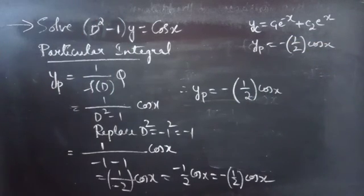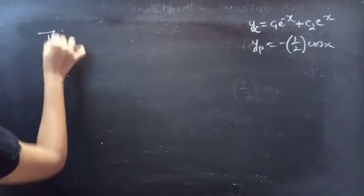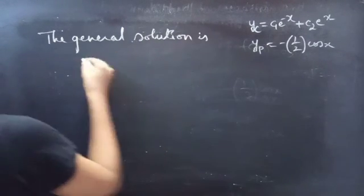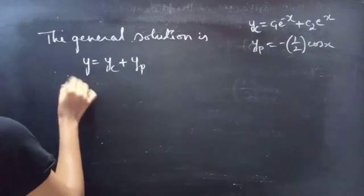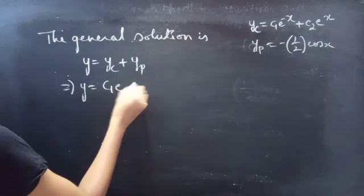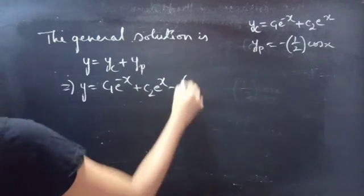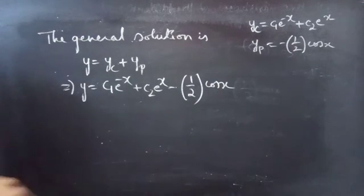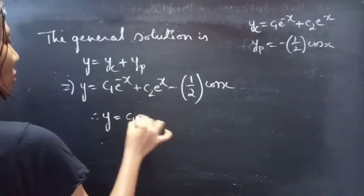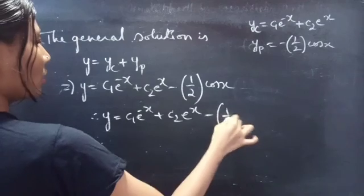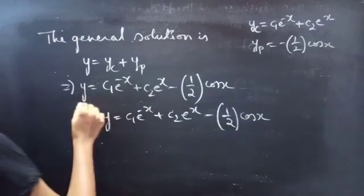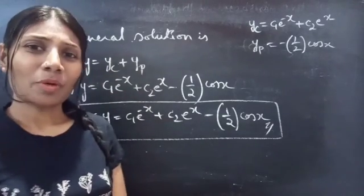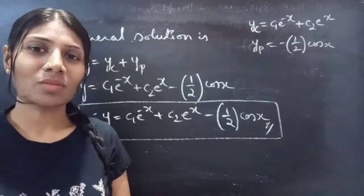Now let's write the general solution. The general solution is y = yc + yp. Substituting yc = c1·e^(−x) + c2·e^(x) and yp = −(1/2)cos x, we get y = c1·e^(−x) + c2·e^(x) − (1/2)cos x as the required solution. We have seen a problem from higher order linear differential equations in this video. Hope you will understand. See you in the next video. Bye-bye.